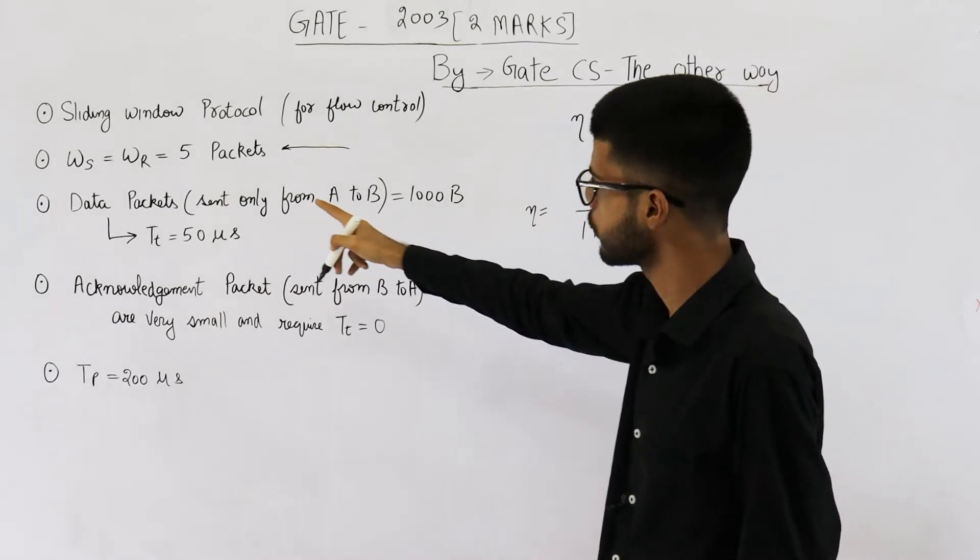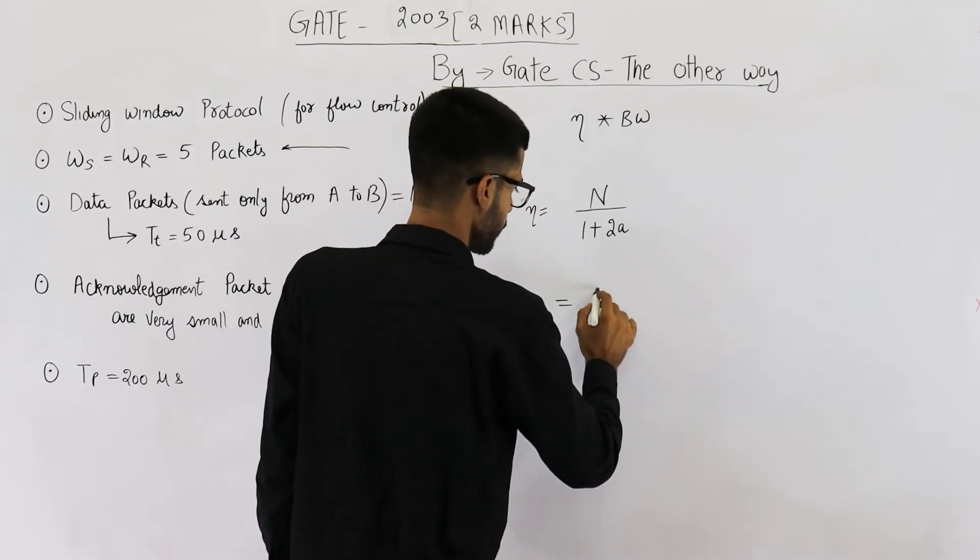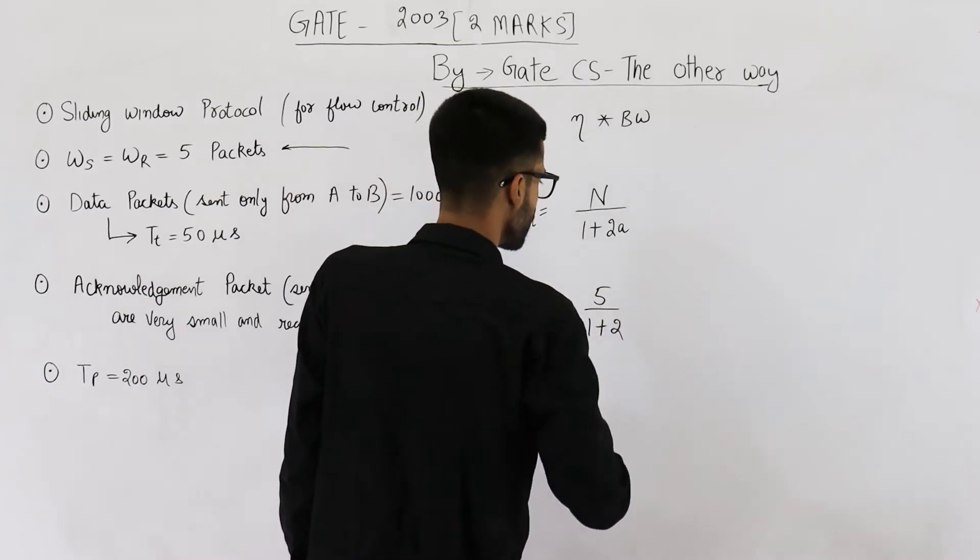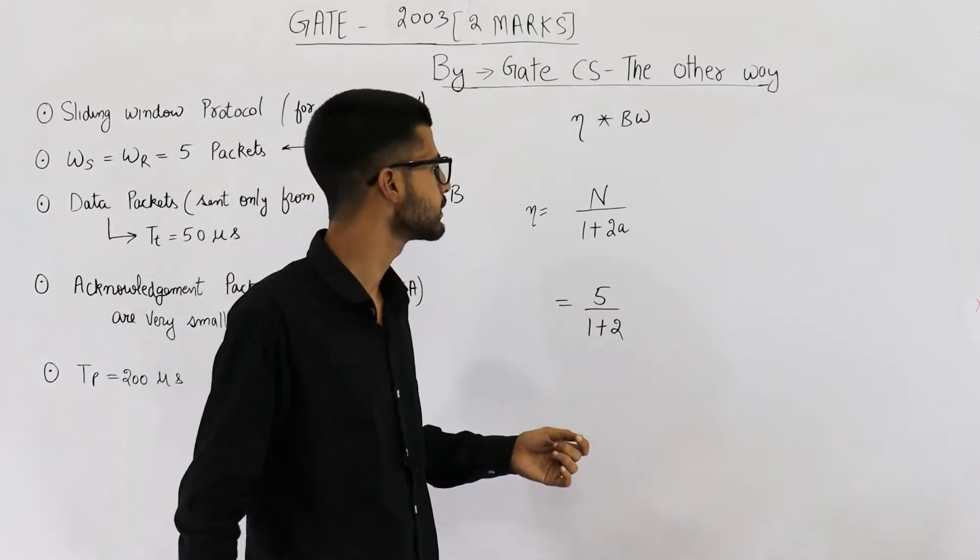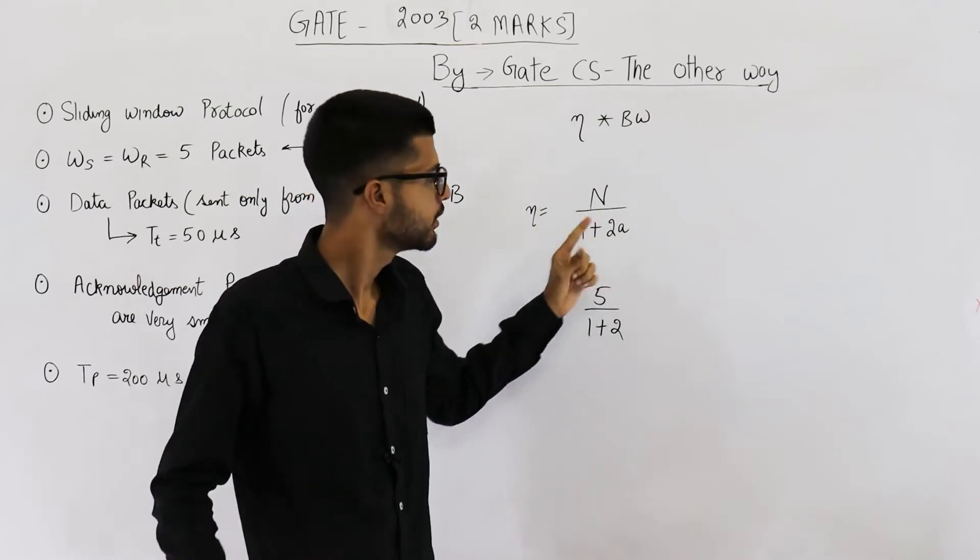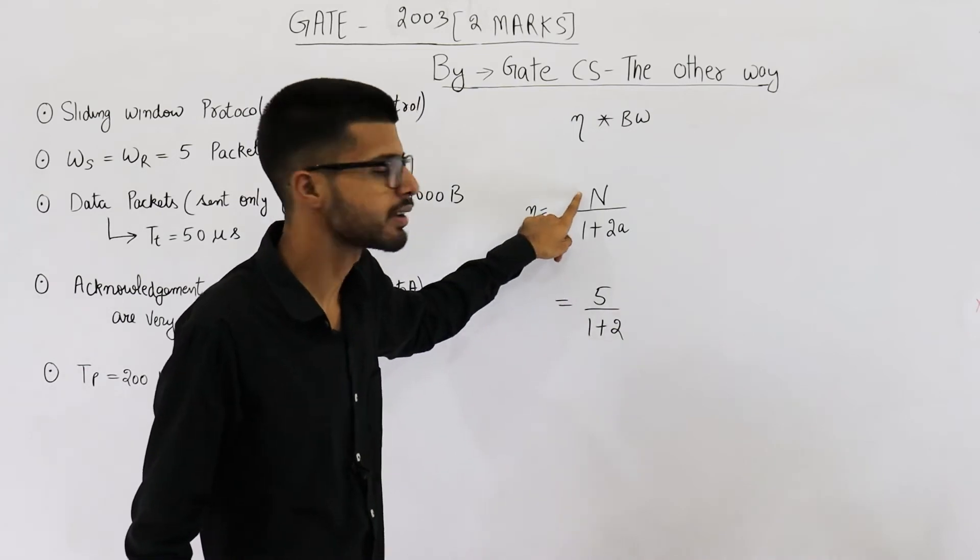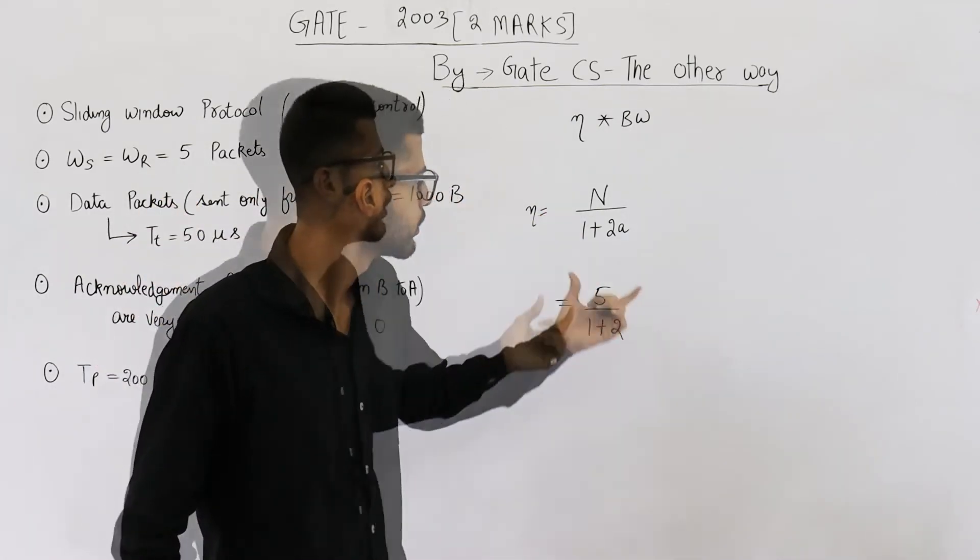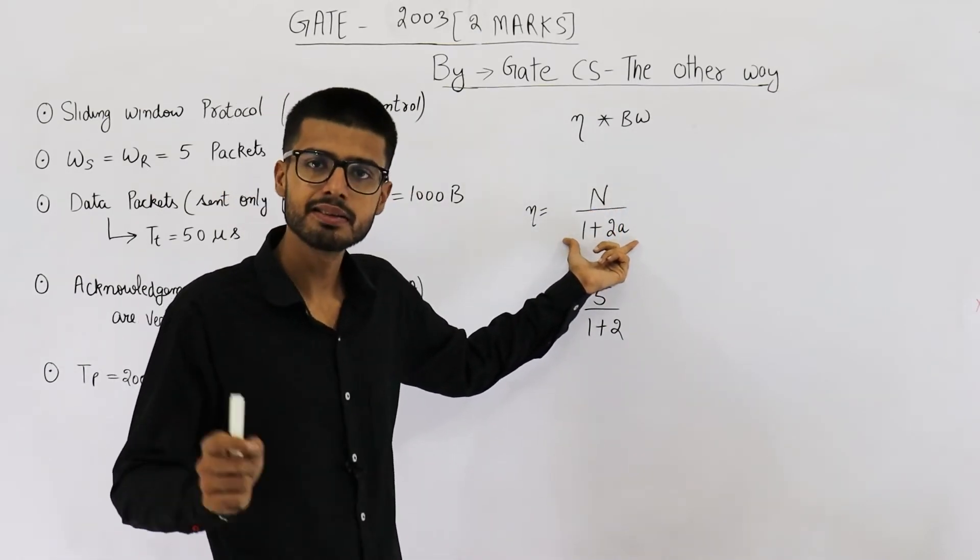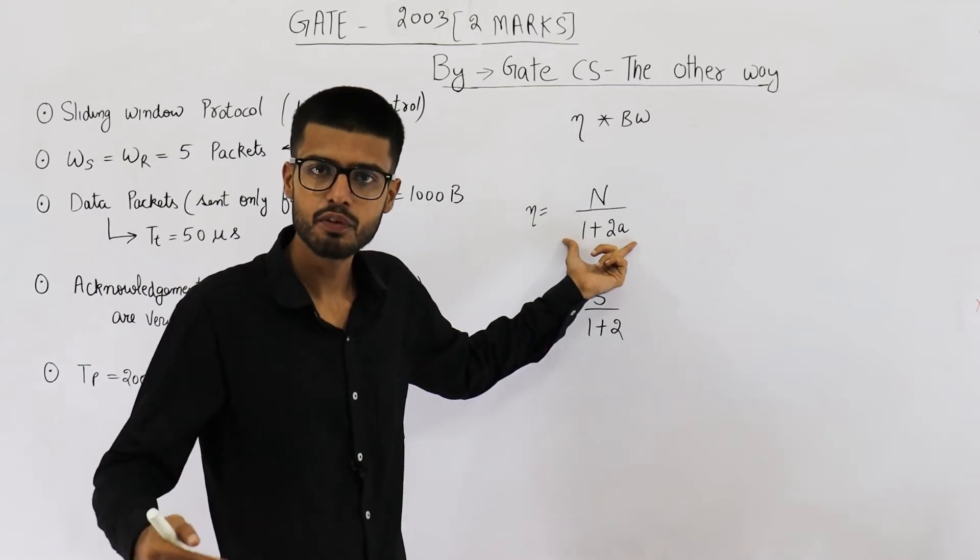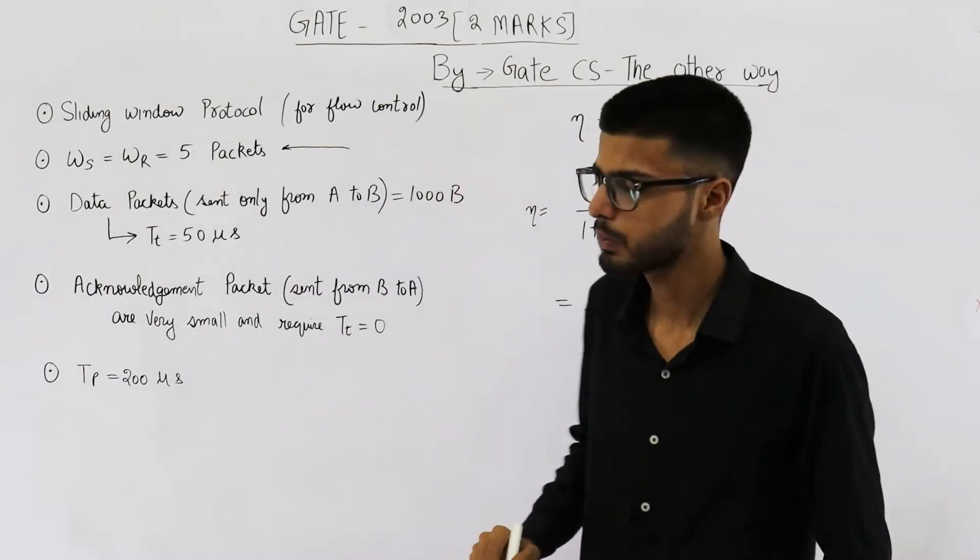N is given as 5. So it is 5 upon 1 plus 2a. In tt plus 2tp in this much time for 100% efficiency, we could send these many packets, 1 plus 2a packets, but we are actually sending only 5 packets. So this is the number of packets that we are actually sending and this is the maximum number of packets that we could possibly send. Now let us find what is A. A is tp divided by tt.